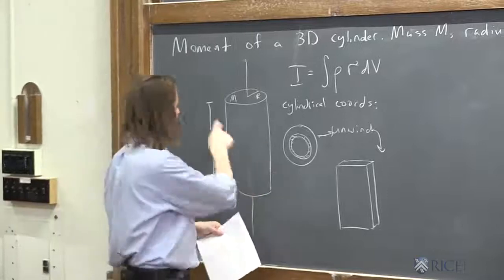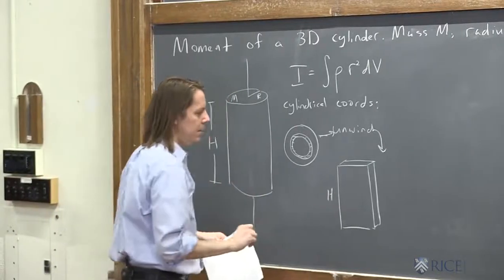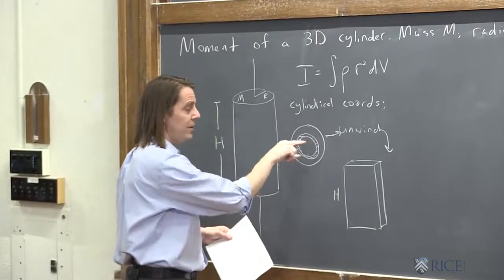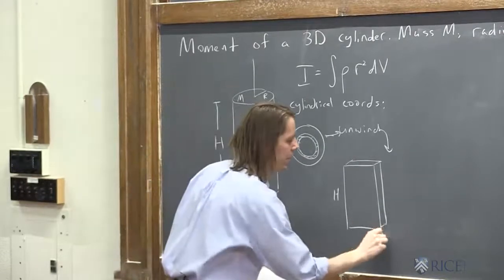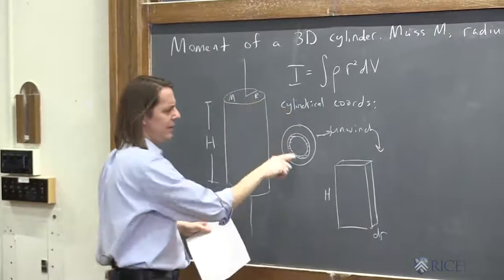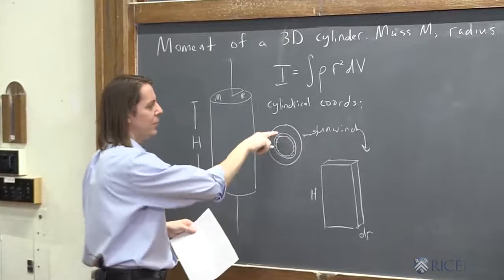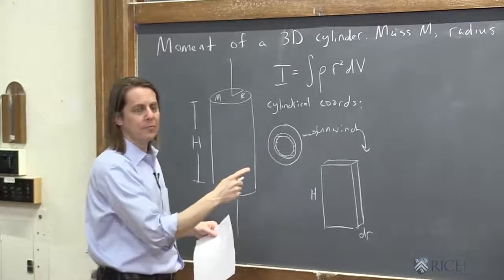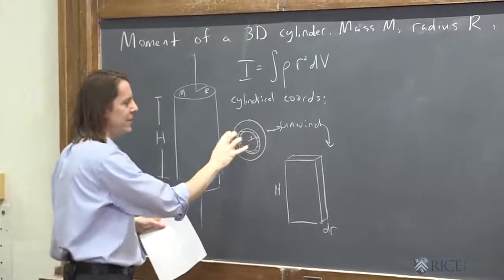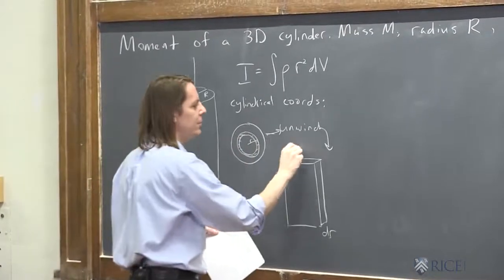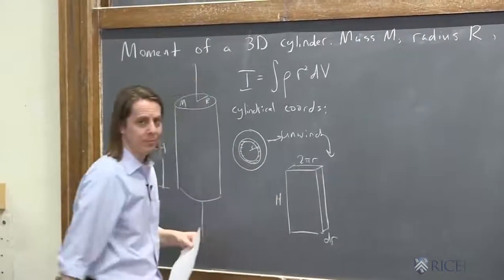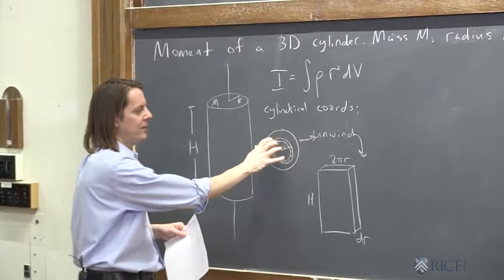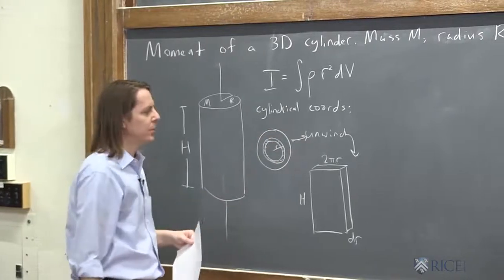So the height of that thing would be H. The thickness would be dr. And let's see, then we got to go around, right? Going around would be 2πr. So whatever radius you're at for that piece, it's 2π times that radius. So that's why it's 2π times a little r.